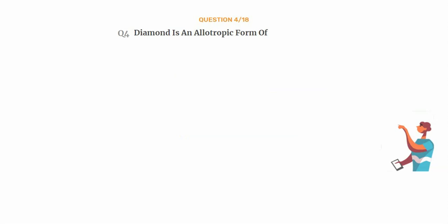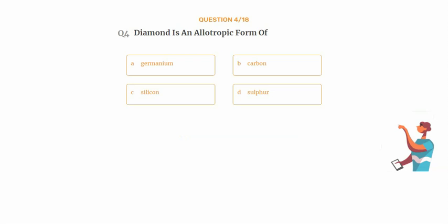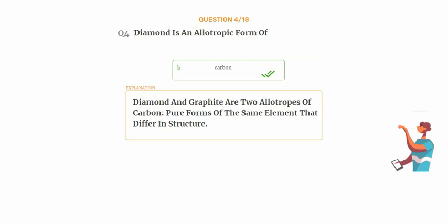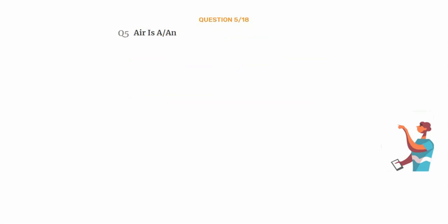Question number four: diamond is an allotropic form of — option A: germanium, option B: carbon, option C: silicon, option D: sulfur. The correct answer is option B: carbon. Diamond and graphite are two allotropes of carbon — pure forms of the same element that differ in structure.